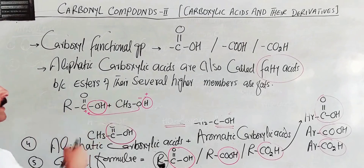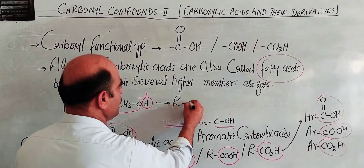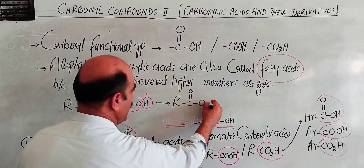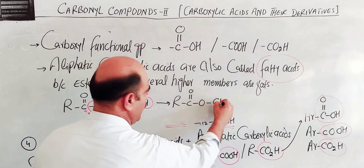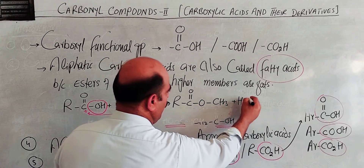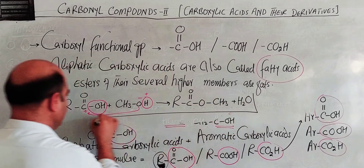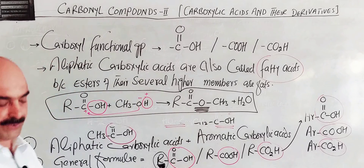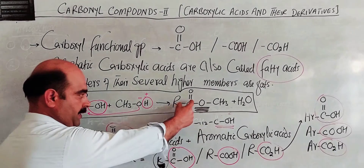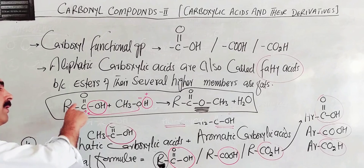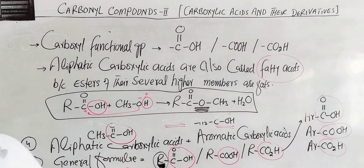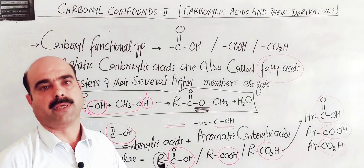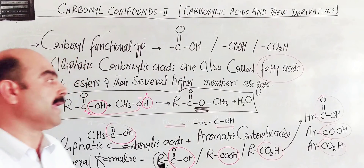When carboxylic acid reacts with an alcohol — for example methyl alcohol CH3OH — the O-H group is removed and combined with the carbonyl carbon to form an ester RCO-O-CH3 plus H2O. This ester formation is why carboxylic acids are called fatty acids, because esters formed from higher carboxylic acids are what we call fats.